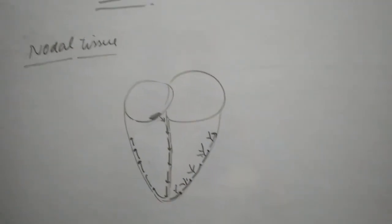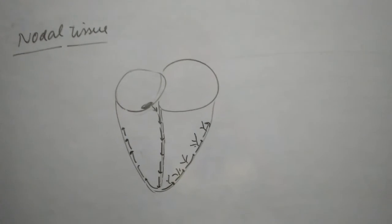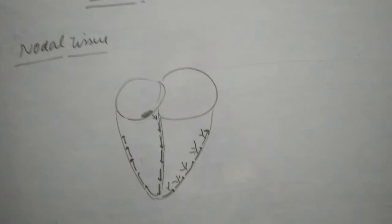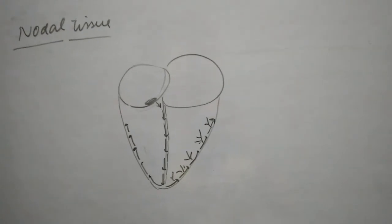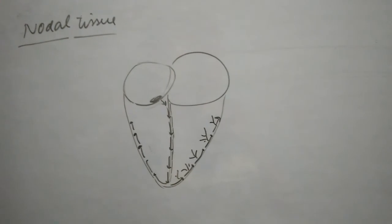These branches give rise to minute fibers, and these fibers further cover up the whole of the ventricular musculature.